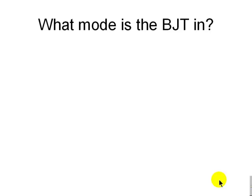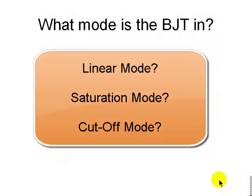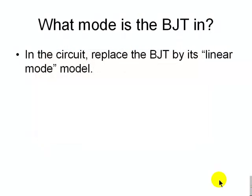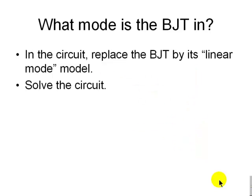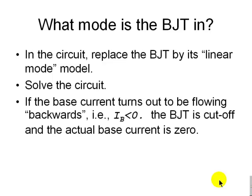The question is: how do we know what is the mode of operation of a given BJT? It's easy. The first thing we do is replace the BJT by its equivalent circuit for linear mode. Then we solve the circuit using MNA or loop analysis or whatever. After that, we check the base current.